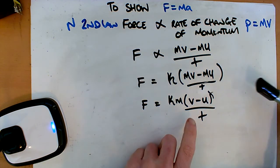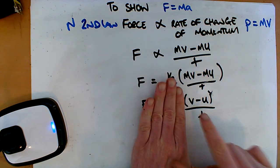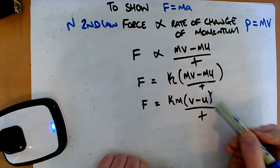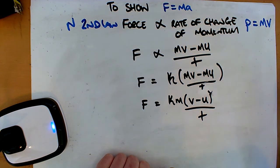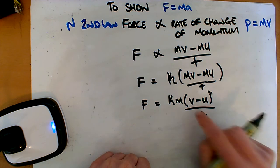Now this should look familiar. This is equal to V minus U over T. What's this? This is the final velocity minus the initial velocity over time, or it's the rate of change of velocity.